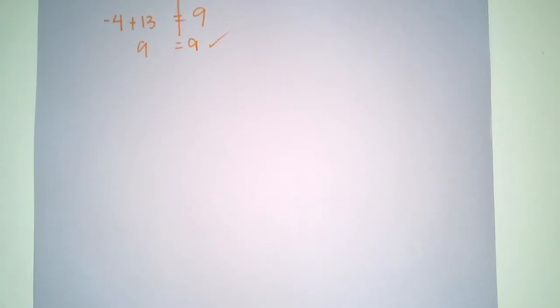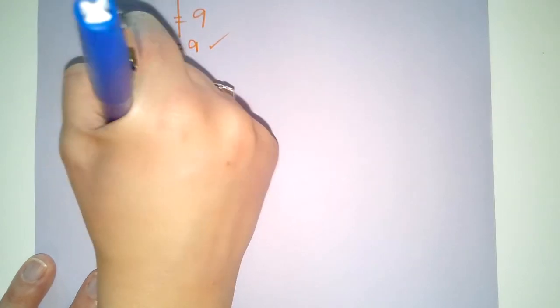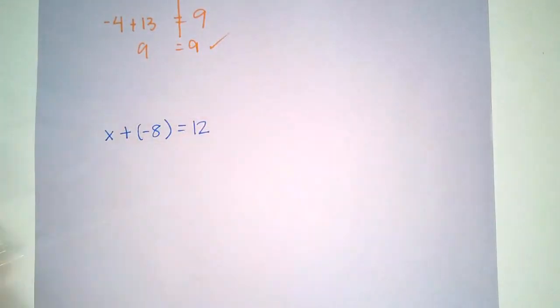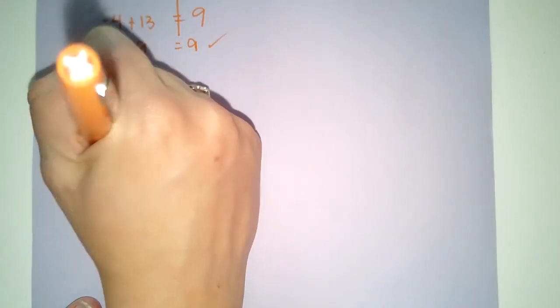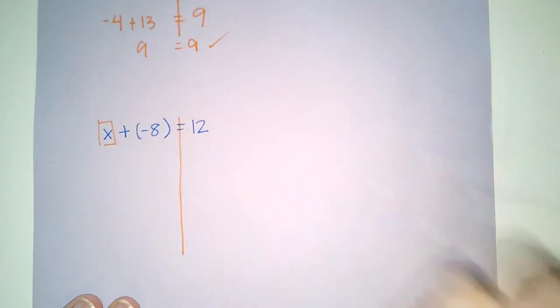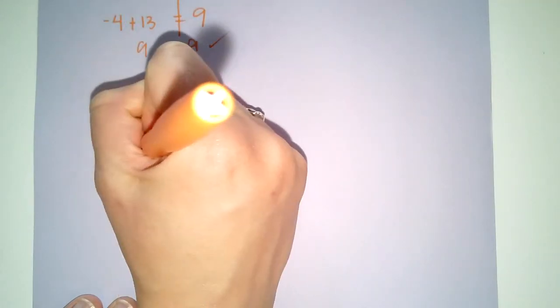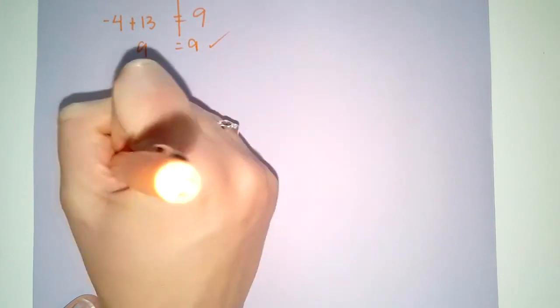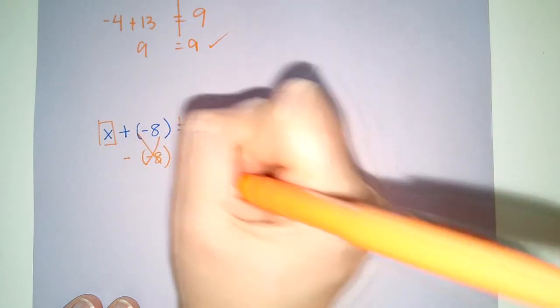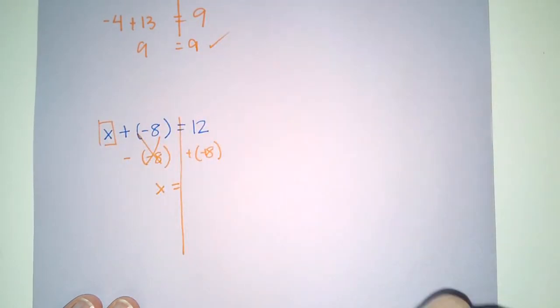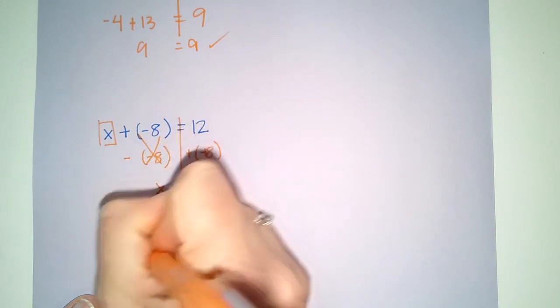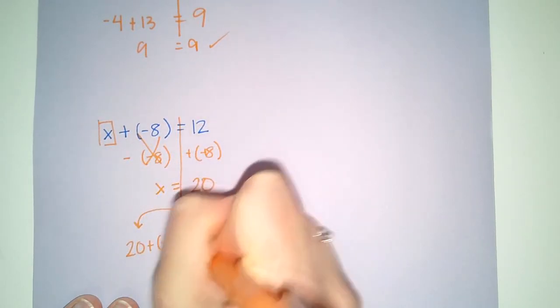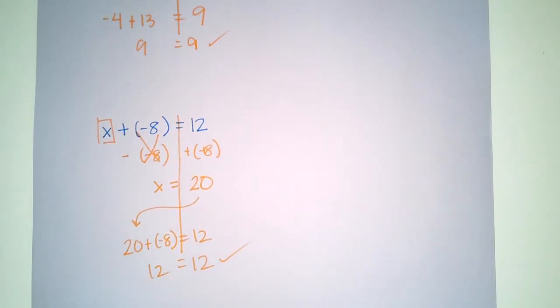Last one. If I have x+(-8)=12. Can you solve for x for me? Solve this equation and type your answer in the box. Well, same way that we've done it every other time. But this time, I'm going to subtract -8. If I have 12-(-8), that leaves me with x=20. And then I would plug my 20 in. 12=12. I've done it correctly.